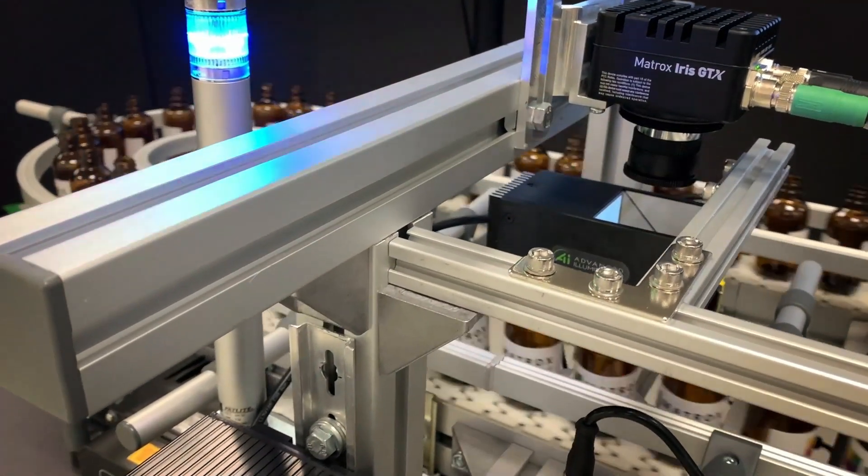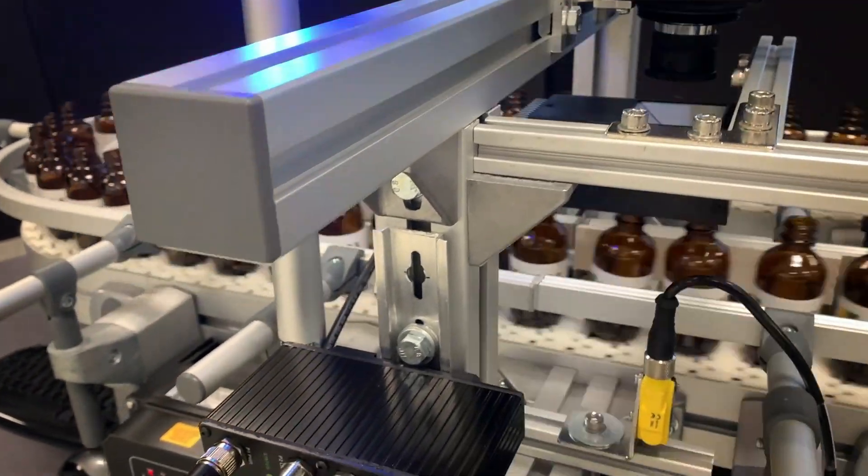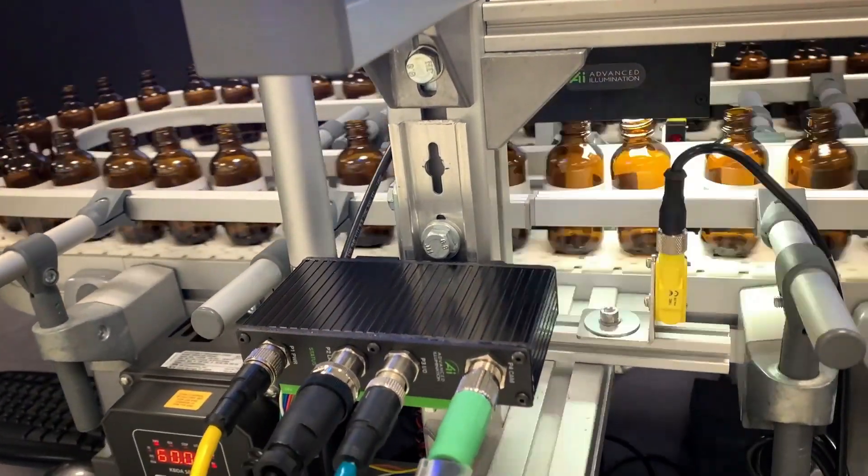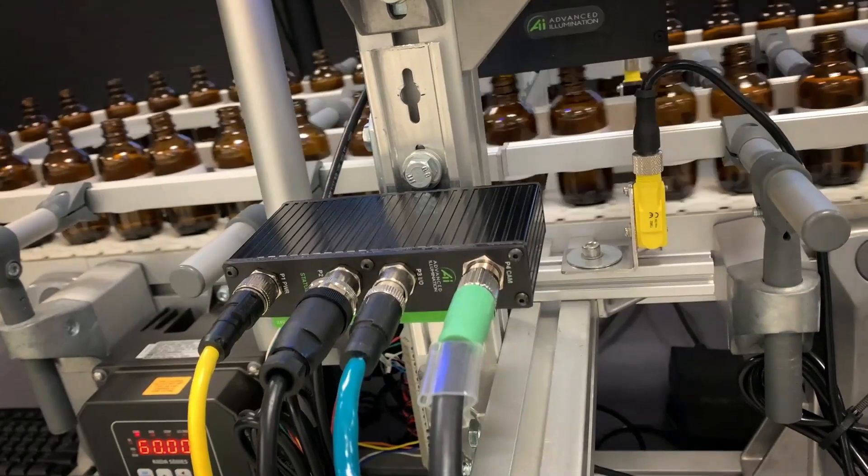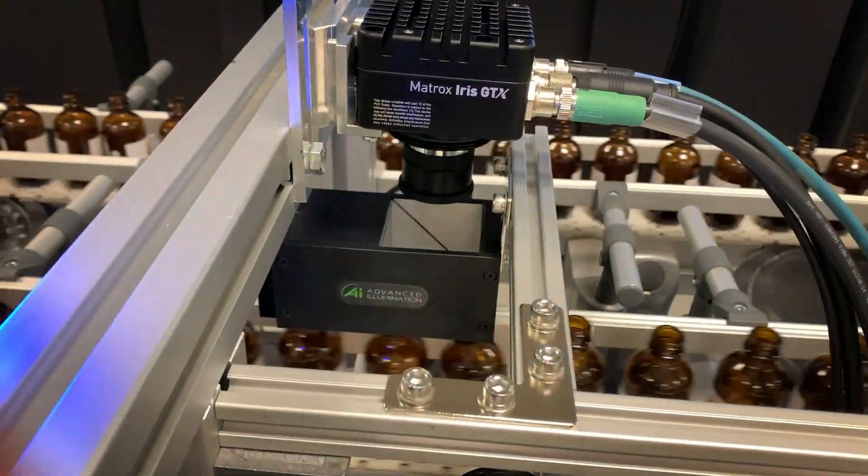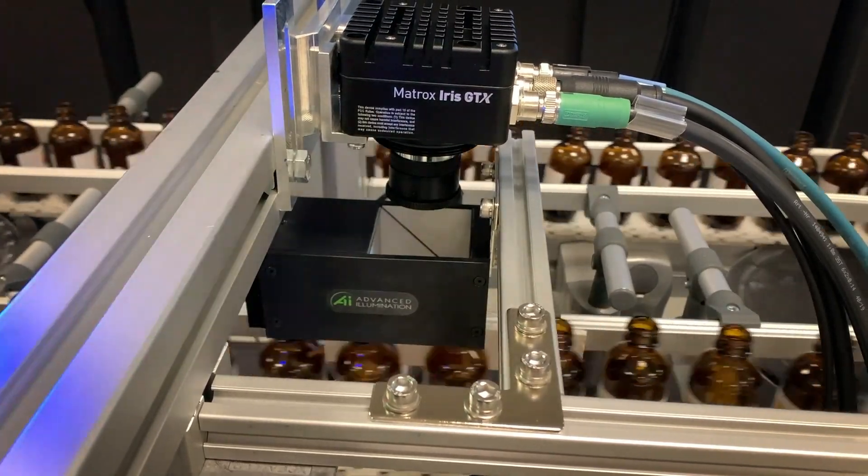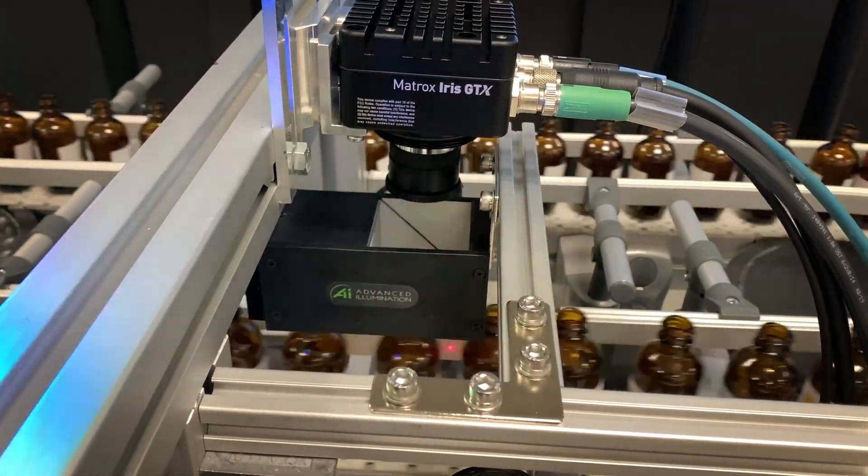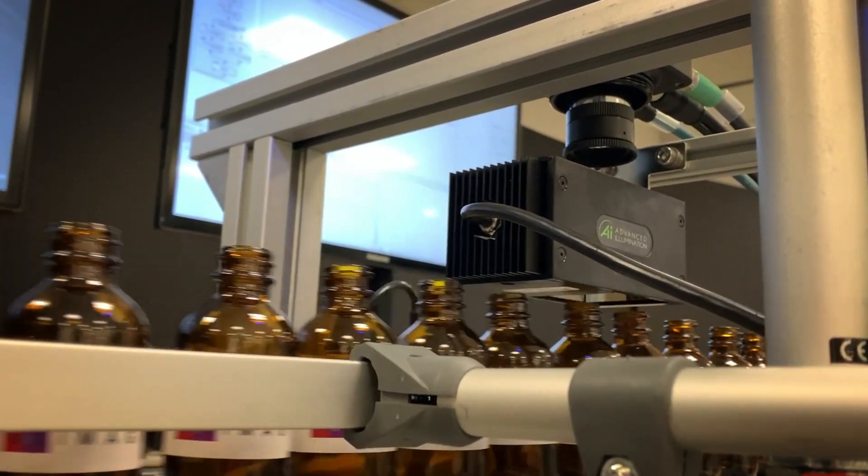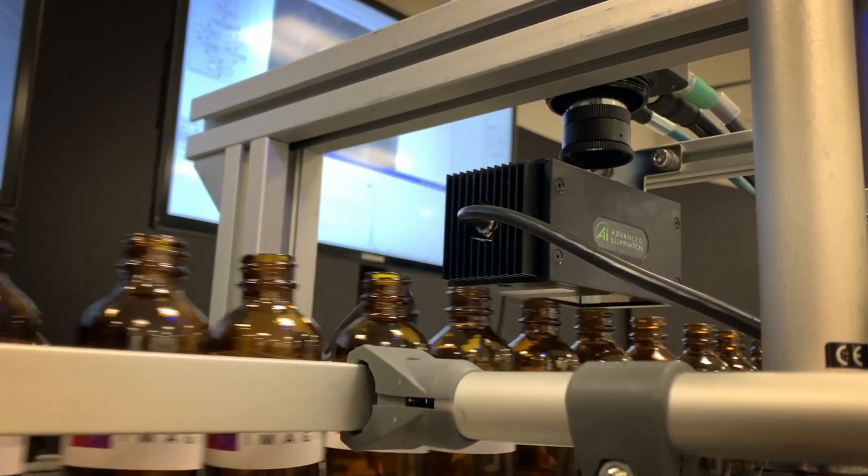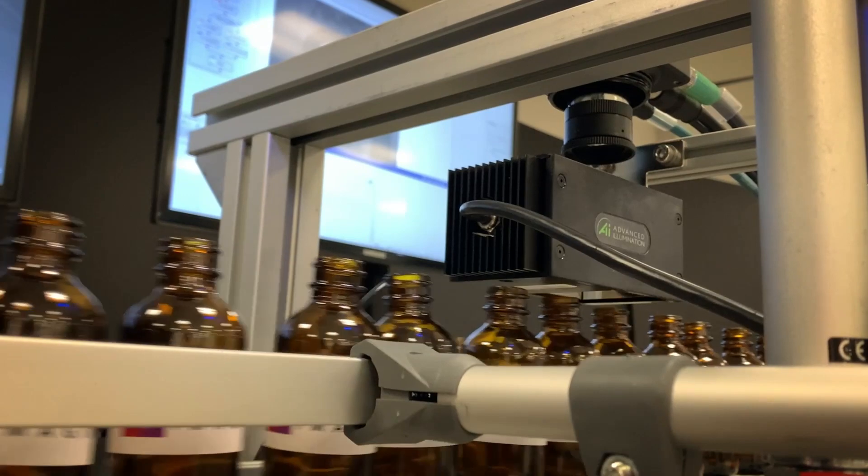Returning to the demo setup, the illumination is controlled through the new LightHub controller from Advanced Illumination. The LightHub was specifically designed for use with the Matrox Iris GTX. It connects directly to the smart camera and can interface to a variety of Advanced Illumination LED lights. For this demo, we're using a square coaxial illuminator.